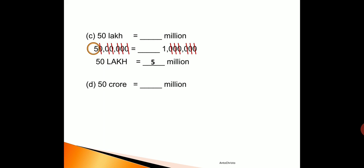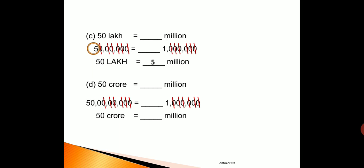Next: 50 crore is equal to dash million. Again we write it in numbers: 50 crore equals one million. Now we start striking the zeros — first zero each side, second, third, fourth, fifth, sixth zero each side. Now which number is left behind? 500 is left. So 50 crore is equal to 500 million. I hope you understood this video.